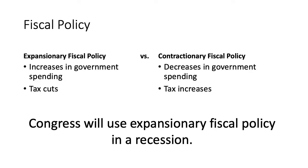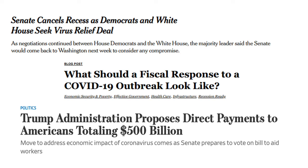There are two types of fiscal policy: expansionary and contractionary. Expansionary fiscal policies tend to cause GDP to increase, while contractionary fiscal policies do the opposite. In a recession, Congress will use expansionary fiscal policies. Over the past week, Congress and the White House have been working on a number of fiscal policies to address the economic effects of the coronavirus outbreak. There are several articles posted on Blackboard describing these policies, and I encourage you to read them.